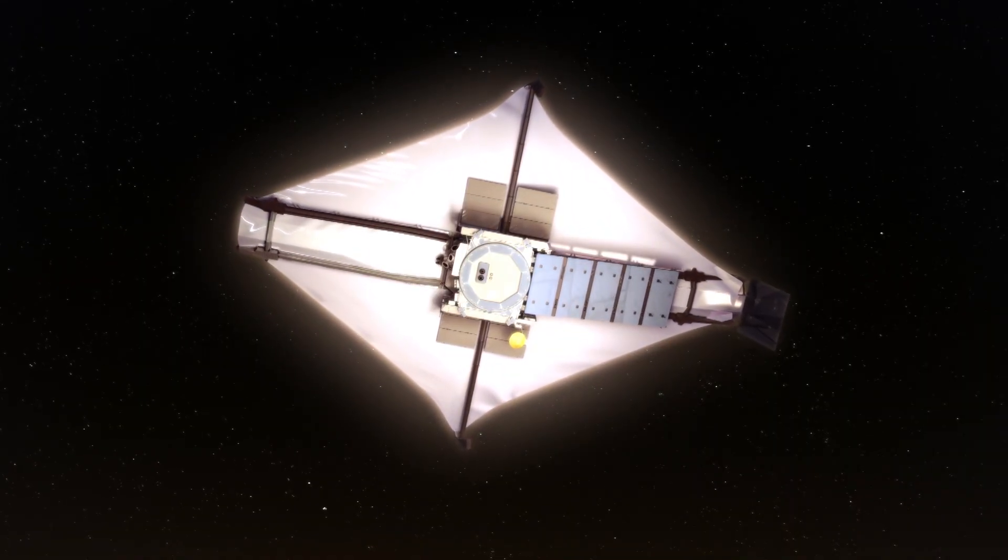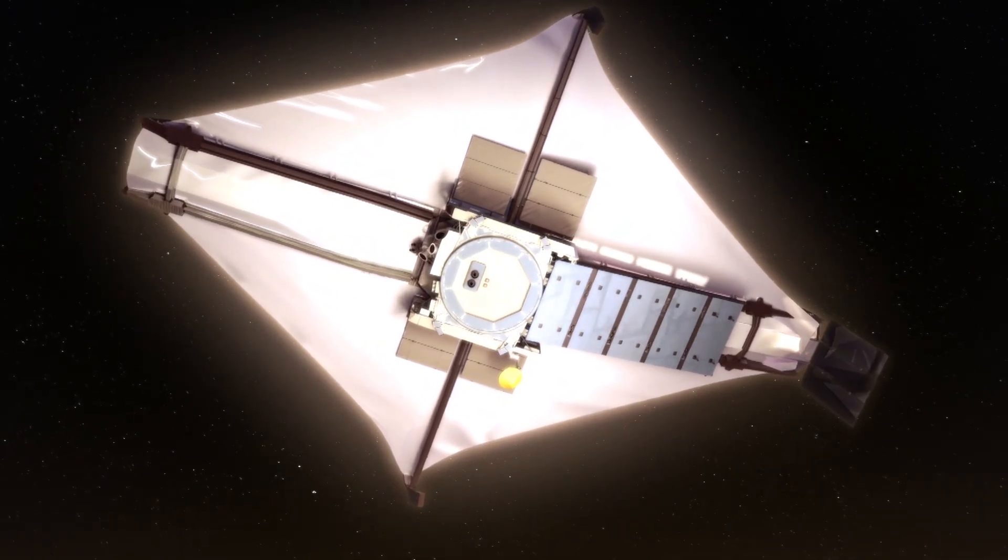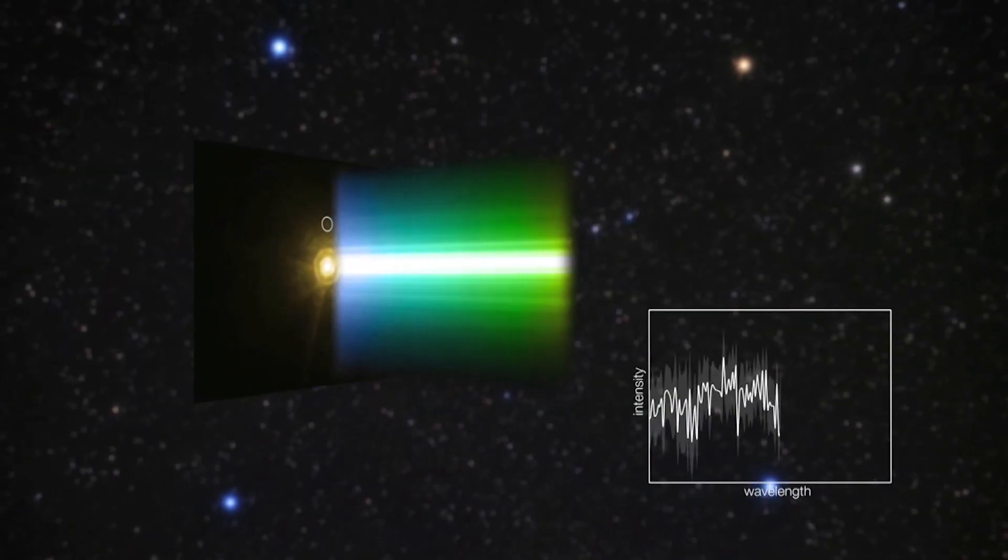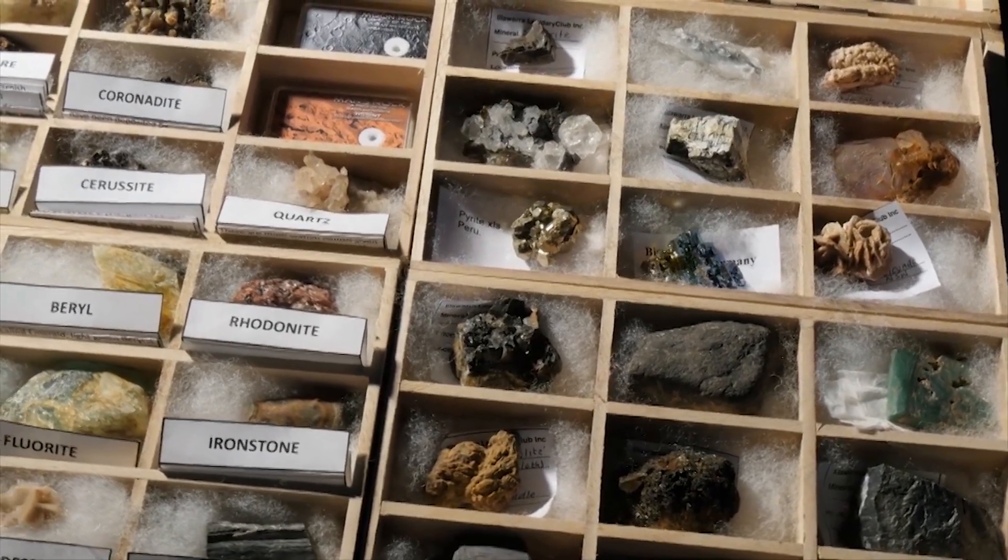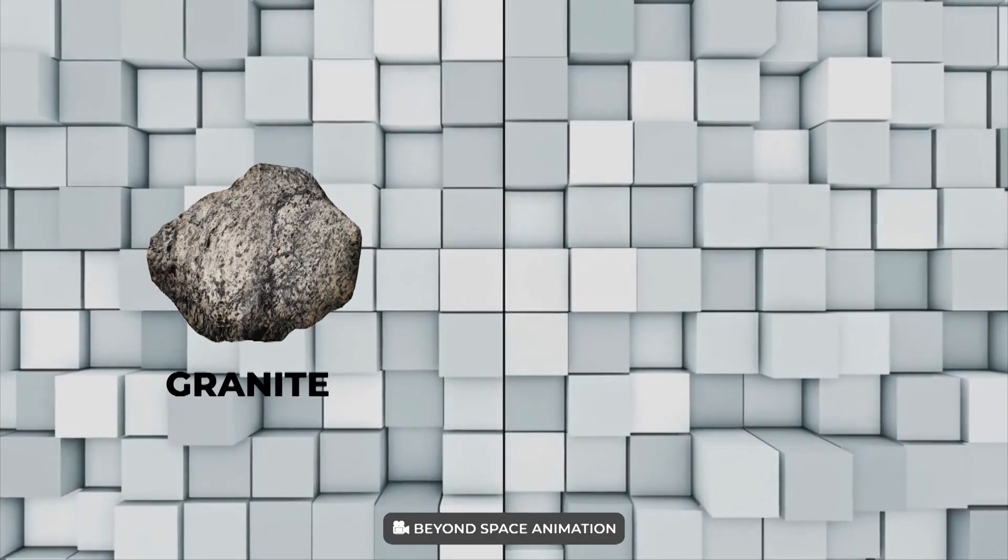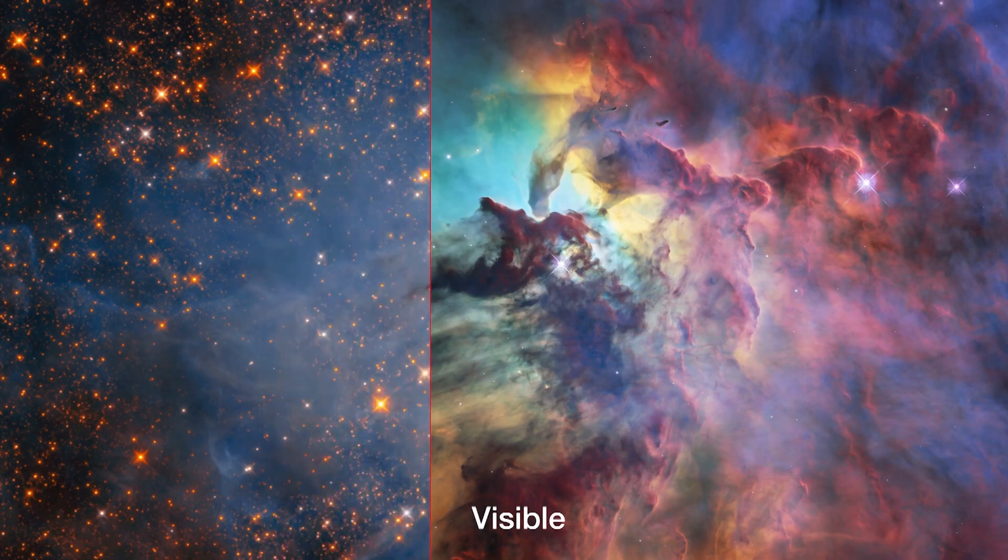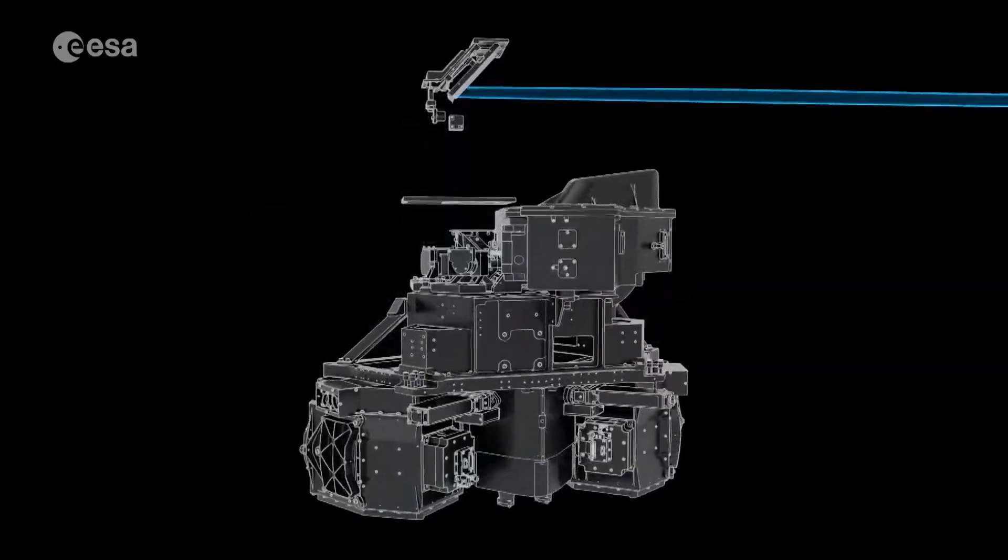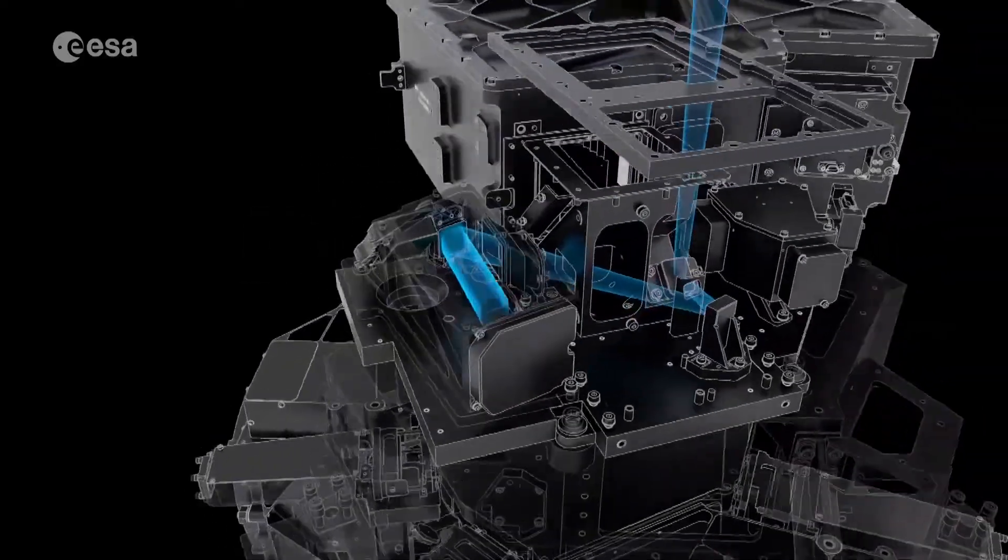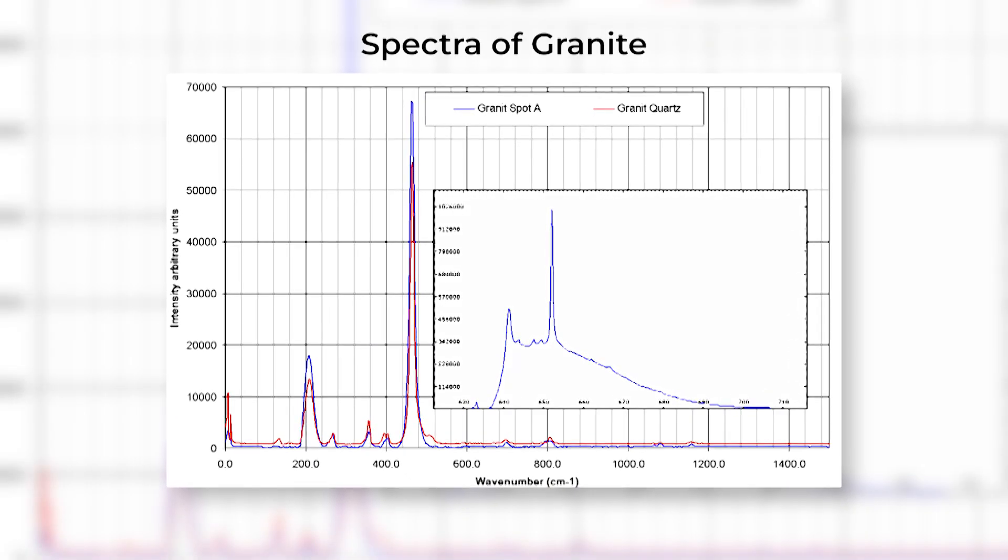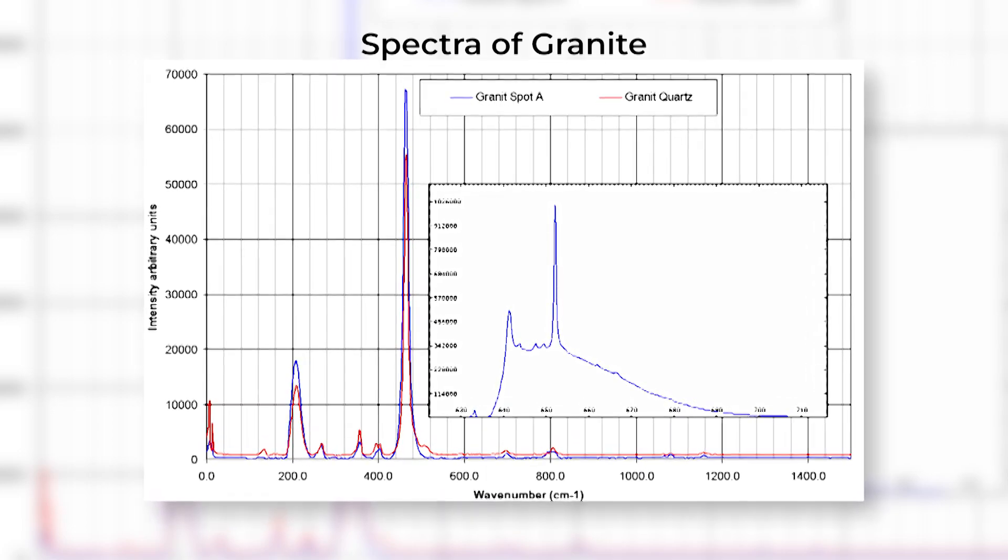While we won't be able to image the surface of LHS 3844b directly with Webb, the lack of an obscuring atmosphere makes it possible to study the surface with spectroscopy. It turns out that different types of rock have different spectra, explained Laura Kreidberg at the Max Planck Institute for Astronomy. You can see with your eyes that granite is lighter in color than basalt. There are similar differences in the infrared light that rocks give off. Kreidberg's team will use MIRI to capture the thermal emission spectrum of the dayside of LHS 3844b and then compare it to spectra of known rocks like basalt and granite to determine its composition.